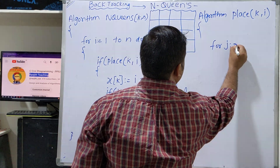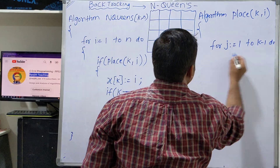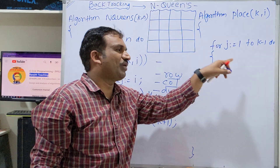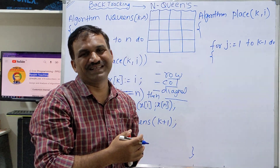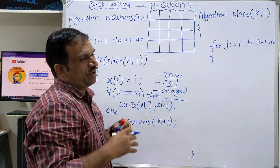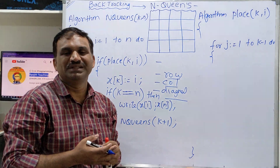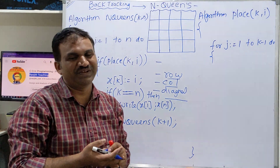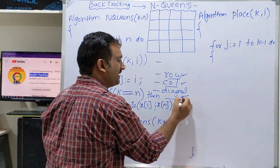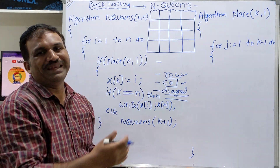For j equal to 1 to k-1, do. We are trying to place the kth queen and must check all previous queens. The row is indicated automatically — the first queen is in row 1, second queen in row 2, third in row 3, fourth in row 4. So row is already monitored by the queen number. We only need to check column and diagonal.